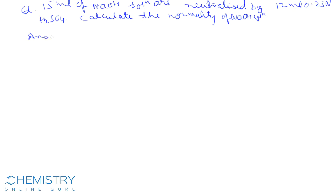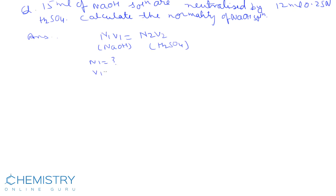In this question, we use N1V1 equal to N2V2. N1V1 is for NaOH and N2V2 is for H2SO4. N1 is what we want to calculate — the normality of NaOH. V1 is given as 15 ml, N2 is given as 0.25, and V2 is given as 12 ml.